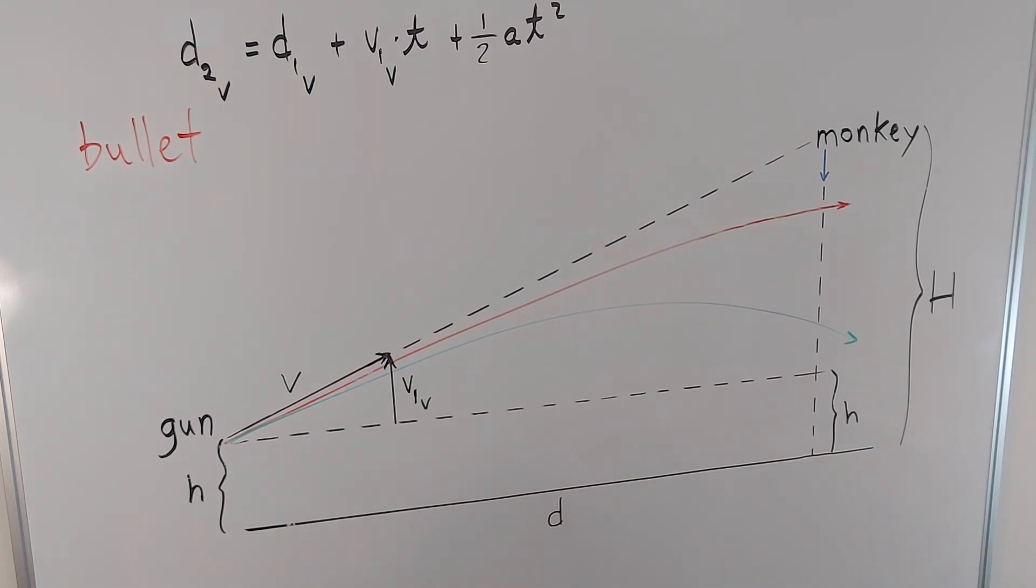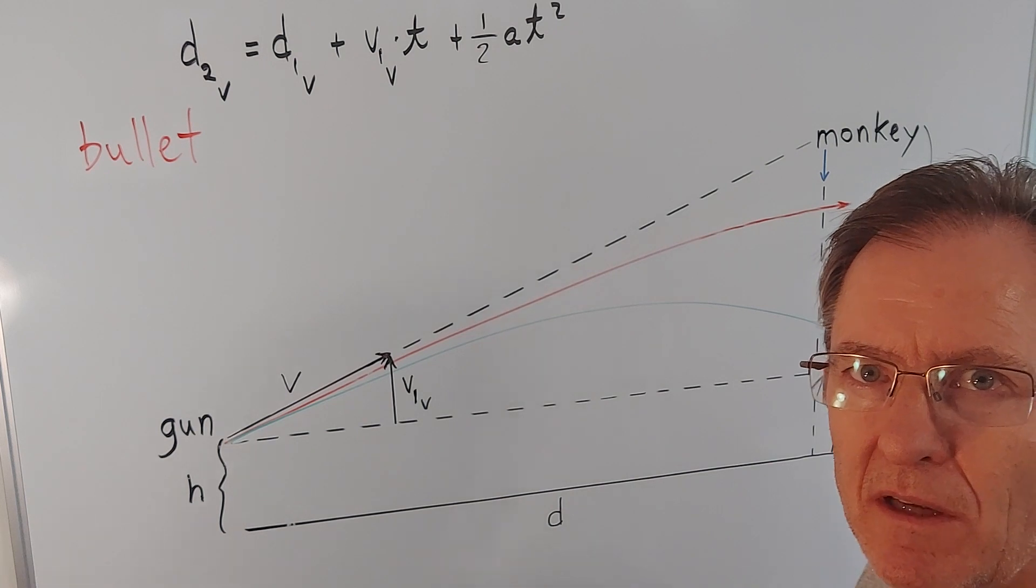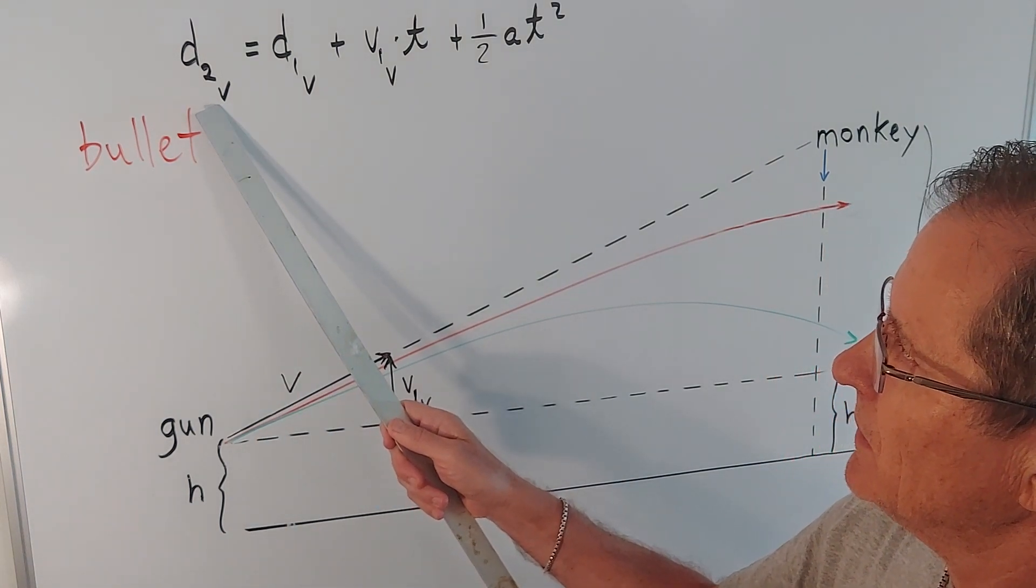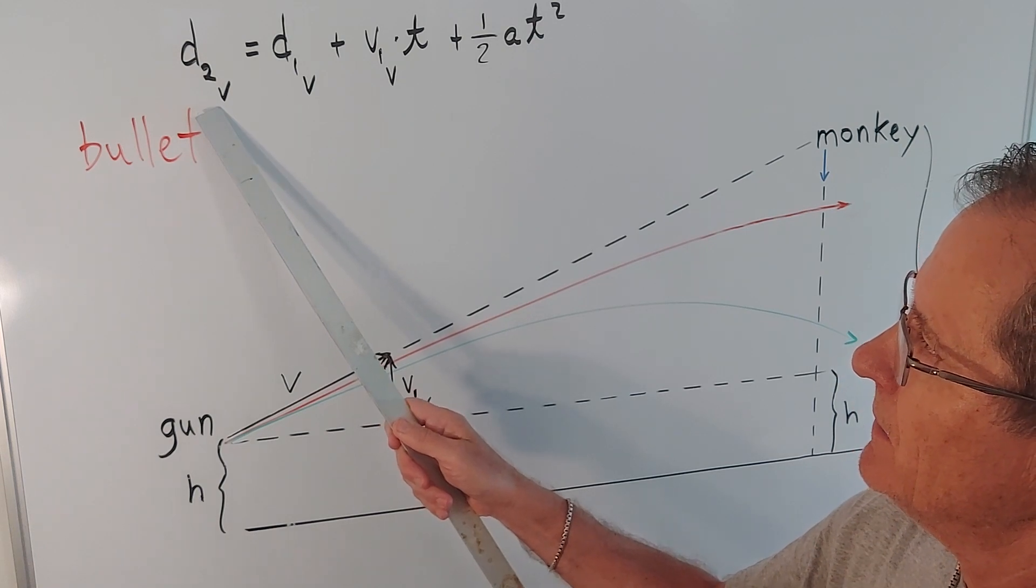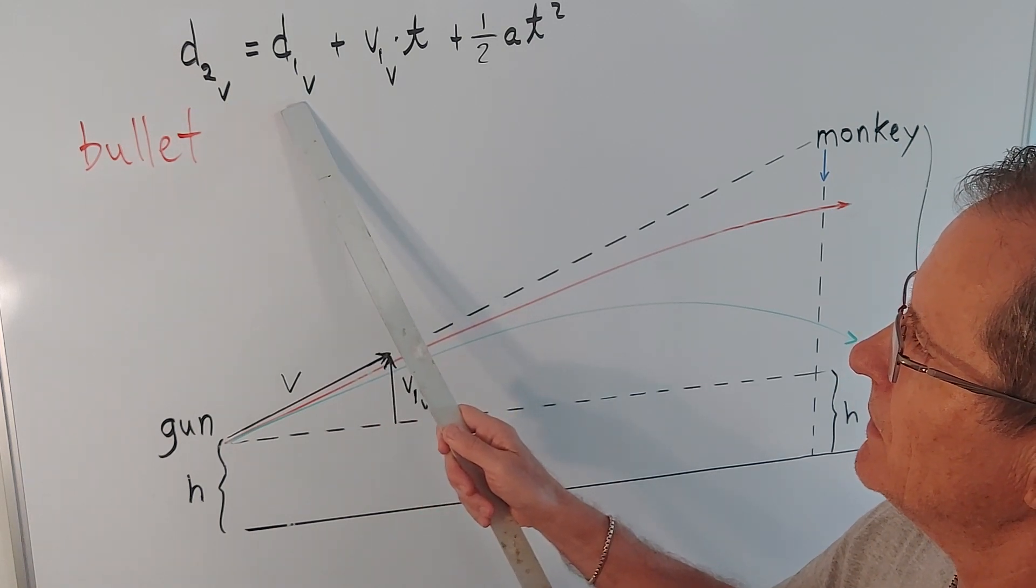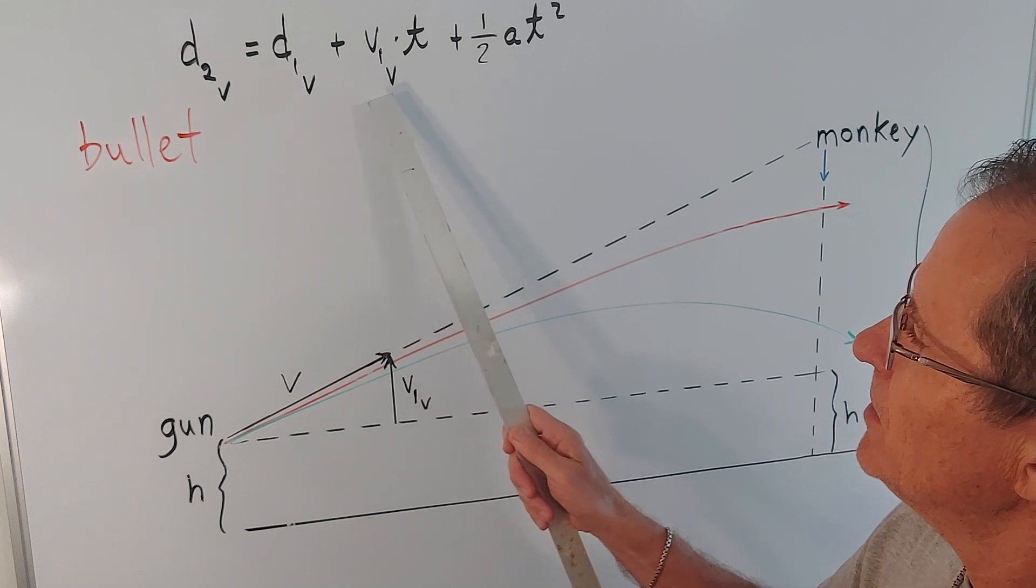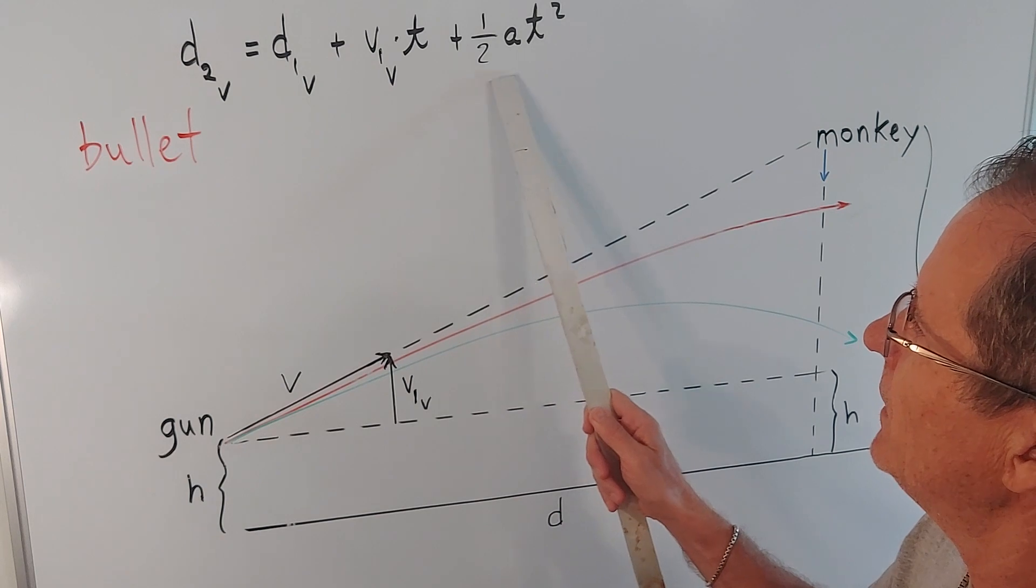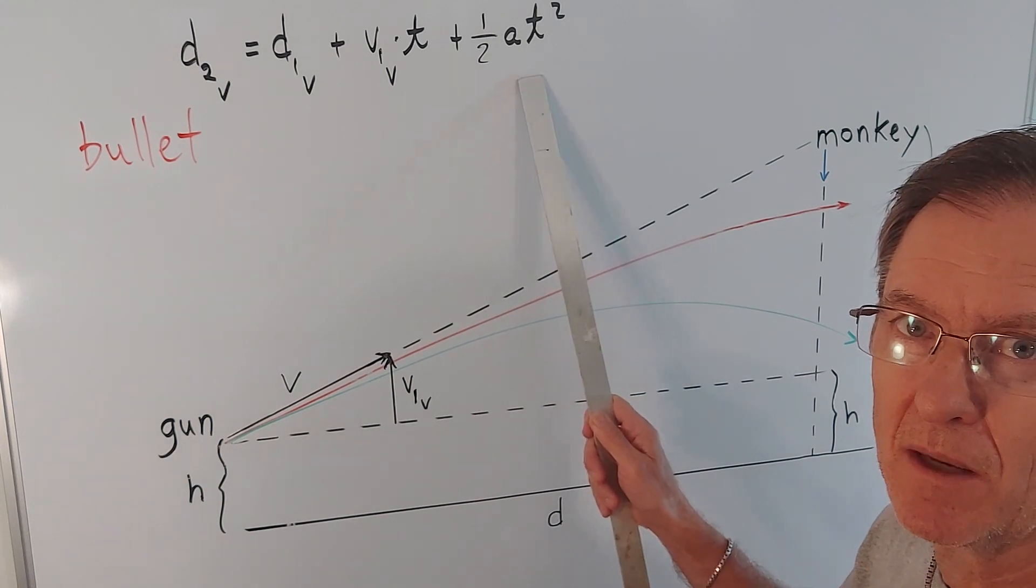So the most famous equation that we're going to be dealing with today is that the final position vertically of an object, or the final height, is based on the original height, or vertical position, plus the original vertical velocity times the time, plus one half the acceleration times the time squared.